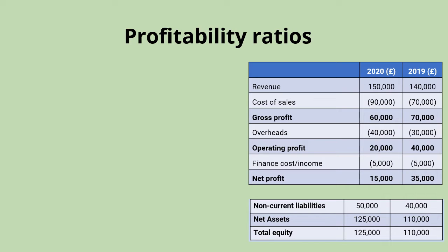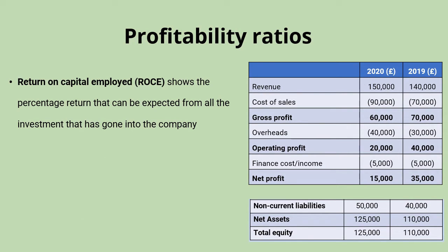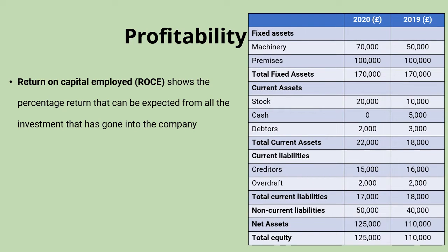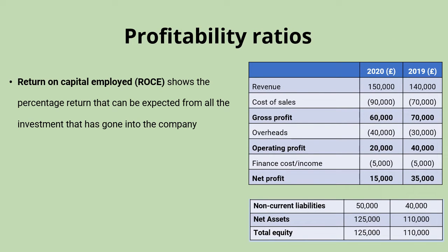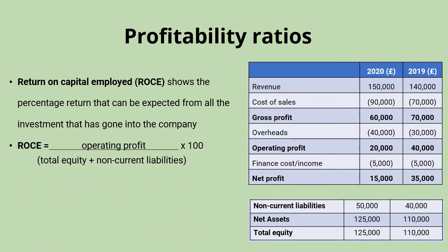Our last profitability ratio is return on capital employed (ROCE). This shows the percentage return that can be expected from all of the investment that's gone into the company — for every pound that goes in, how many pence do we generate in operating profit in return. To make this calculation, we need to draw information from both the balance sheet and the income statement. The formula is: operating profit ÷ total capital employed × 100.